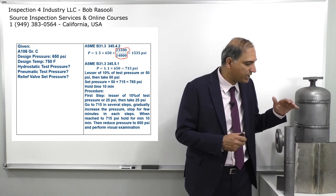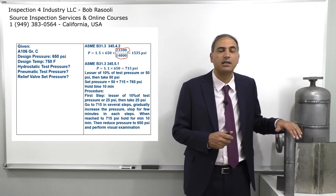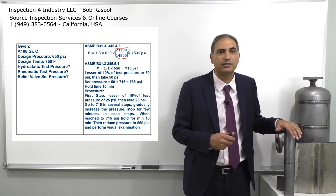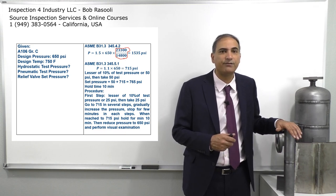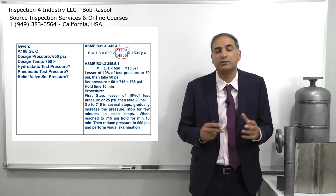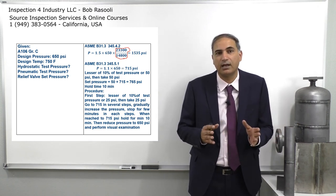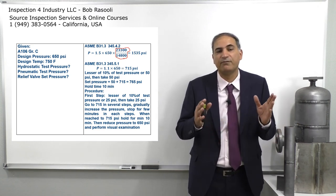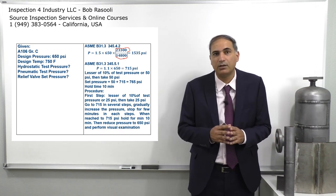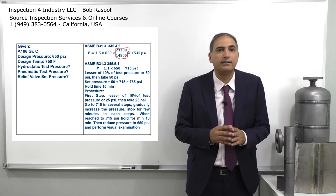We calculate and get our hydrostatic test pressure as 1535 psi. For the pneumatic test, using 1.1 times the design pressure gives us 715 psi — almost half of the hydrostatic pressure.